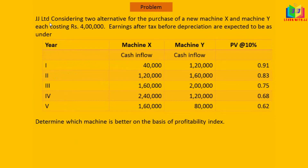Now we will see a problem. JJ Limited is considering two alternatives for the purchase of a new machine — Machine X and Machine Y — each costing rupees 4 lakh. Earnings after tax but before depreciation are given. The present value at a 10 percent rate is also given. We need to determine which machine is better on the basis of profitability index.